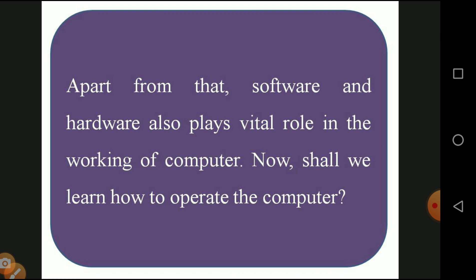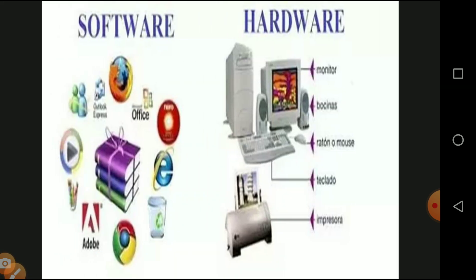Software and hardware both play a vital role in operating the computer. Hardware includes the mouse, keyboard, monitor, and internal parts. Software means programs running by means of coding methods. One is called hardware and another is called software. This diagram differentiates software and hardware — Mozilla Firefox, Windows Office, Internet Explorer, Recycle Bin, Adobe Reader, Google Chrome are software examples, while CPU, monitor, and speaker are hardware.